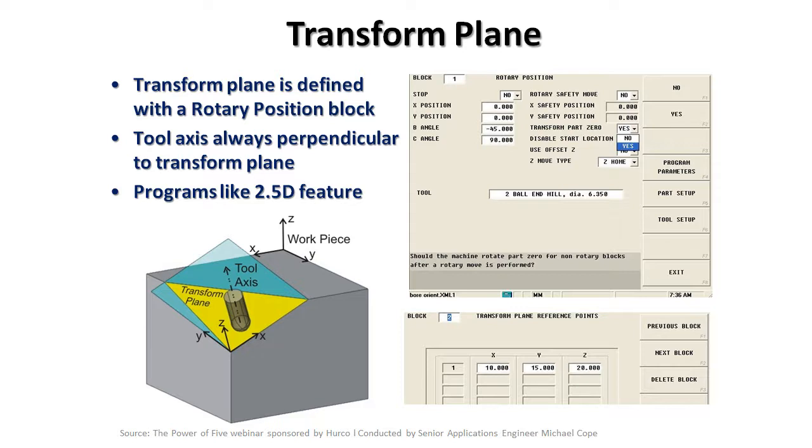Transform Plane allows us to use either a swivel head or a tilting trunnion machine to position the workpiece or tool head in the correct orientation. In this example, we've used a B-axis tilting head and a C-axis rotary table to position the tool axis perpendicular to the area of the part that we want to cut.